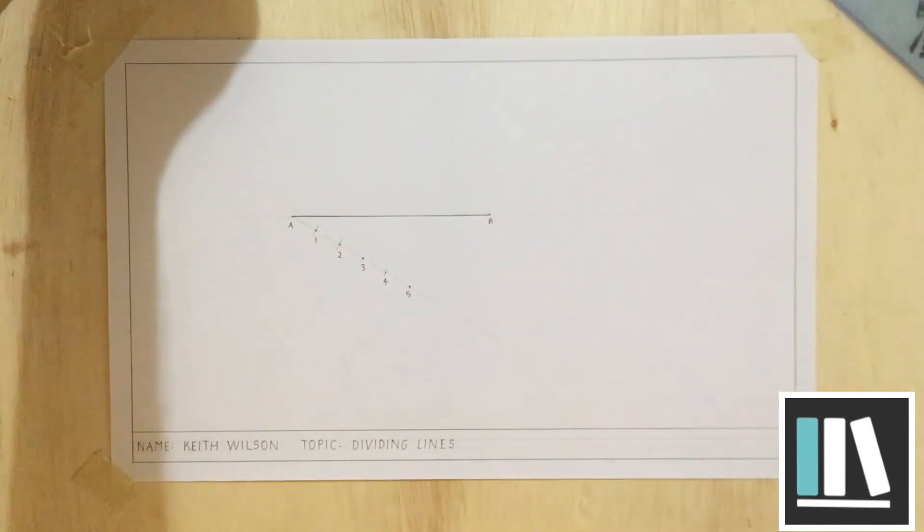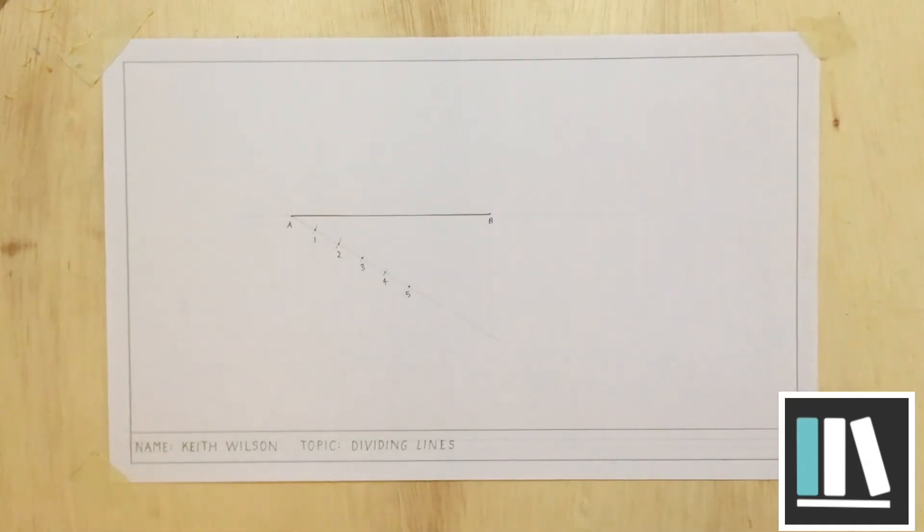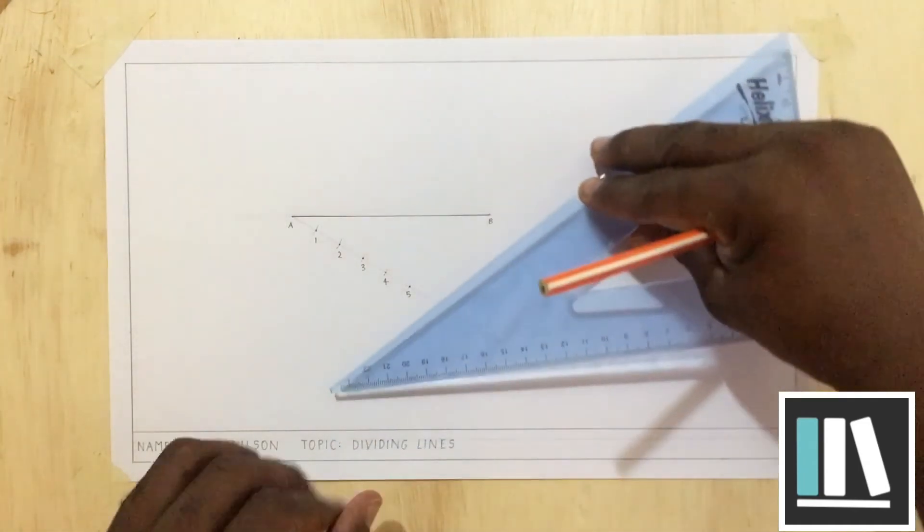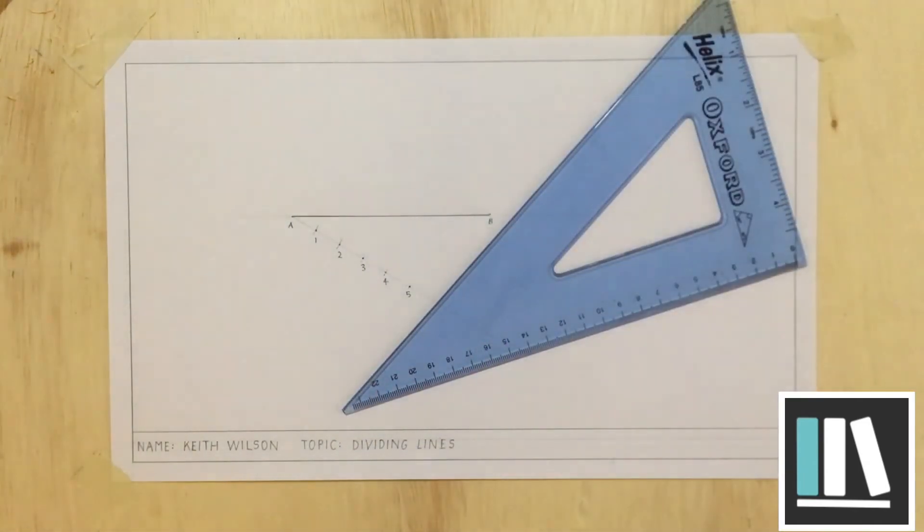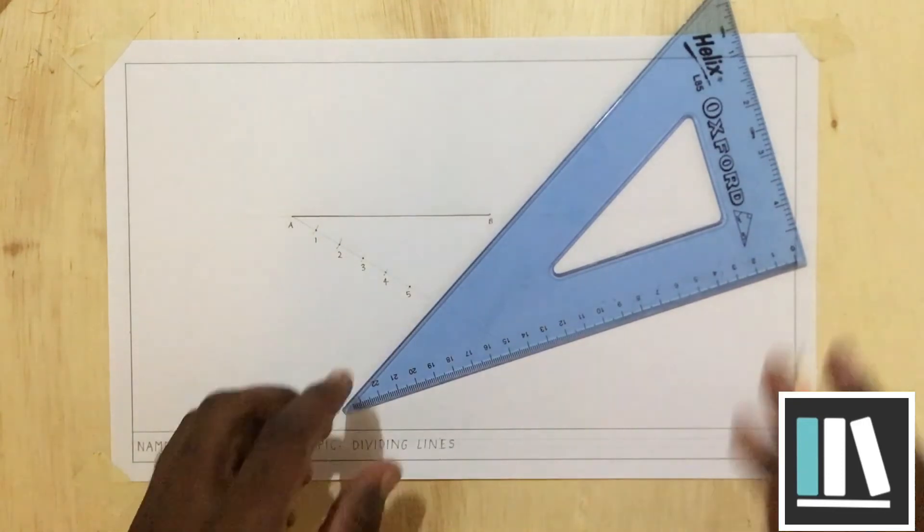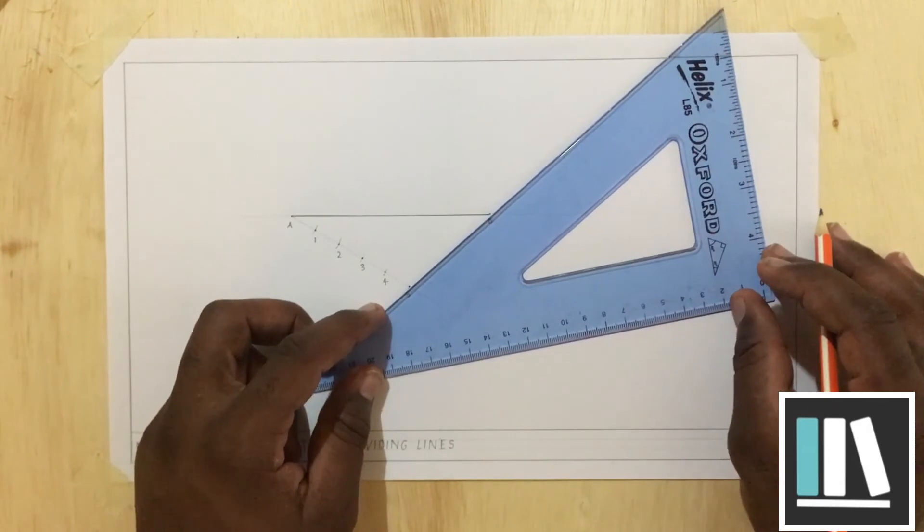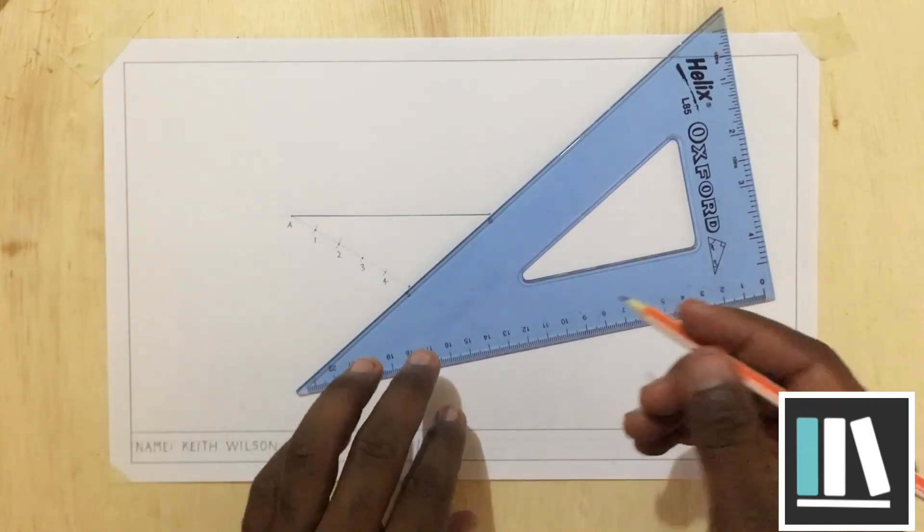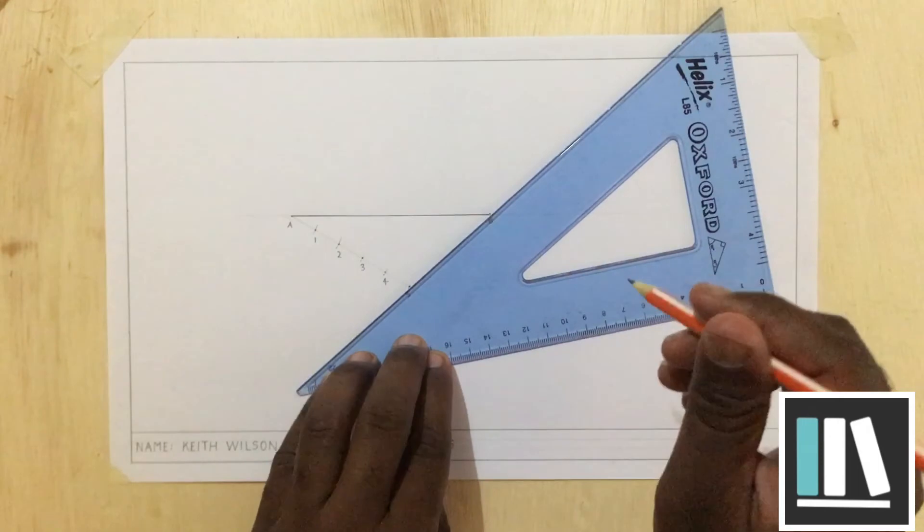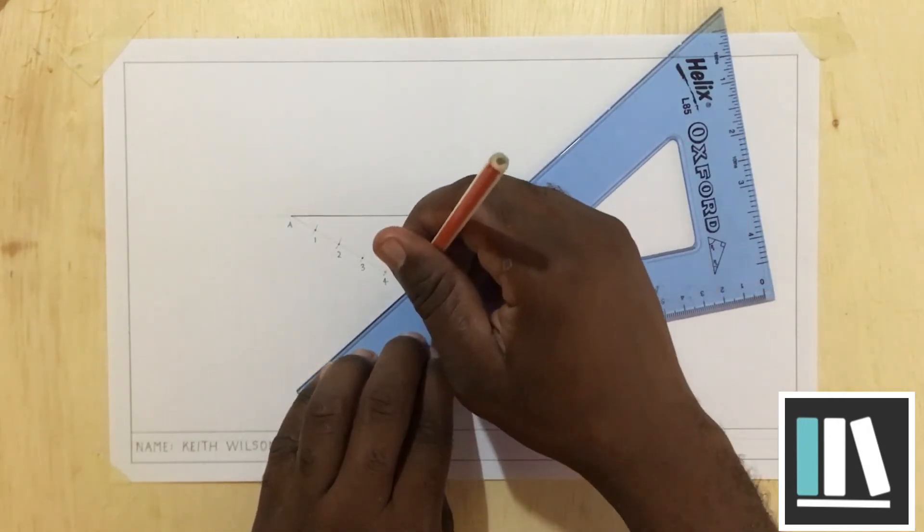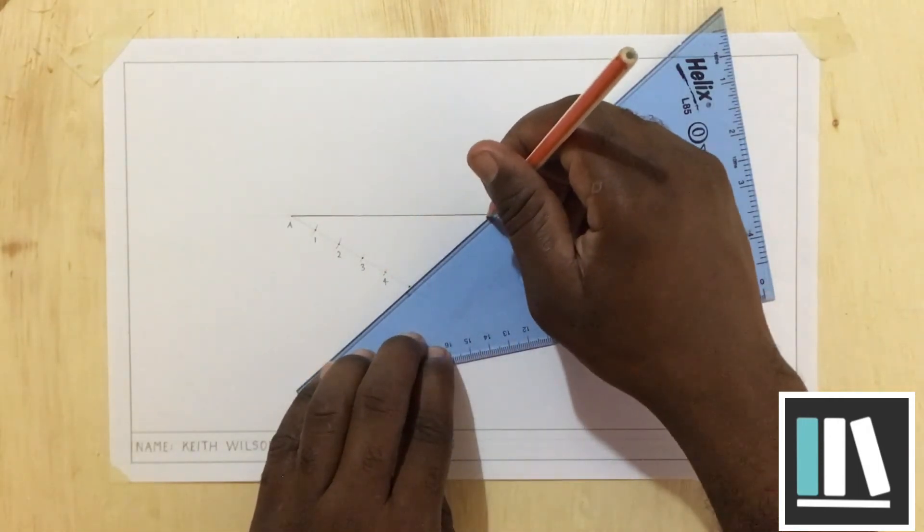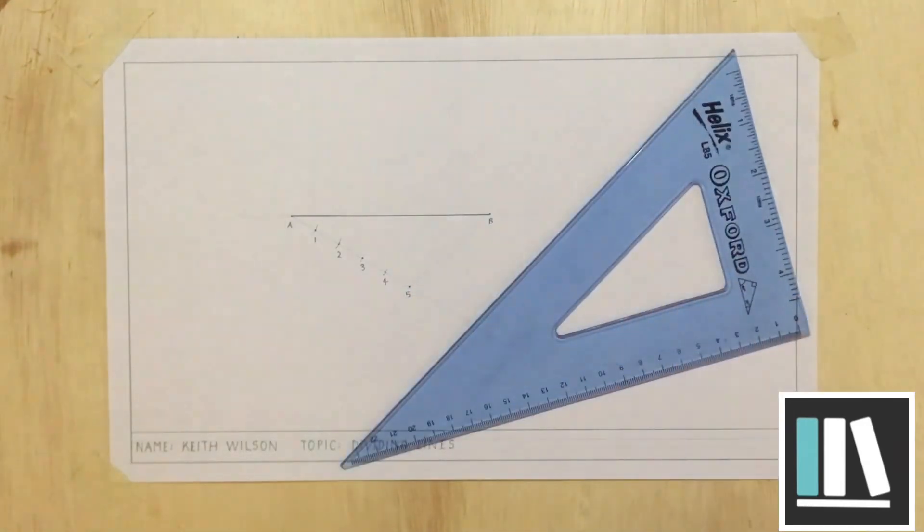After I've got my last point, I am going to connect point five to point B using my set square. Again, I don't need my T square for this exercise. For this part of the exercise, ensure that you use a construction line to do so.